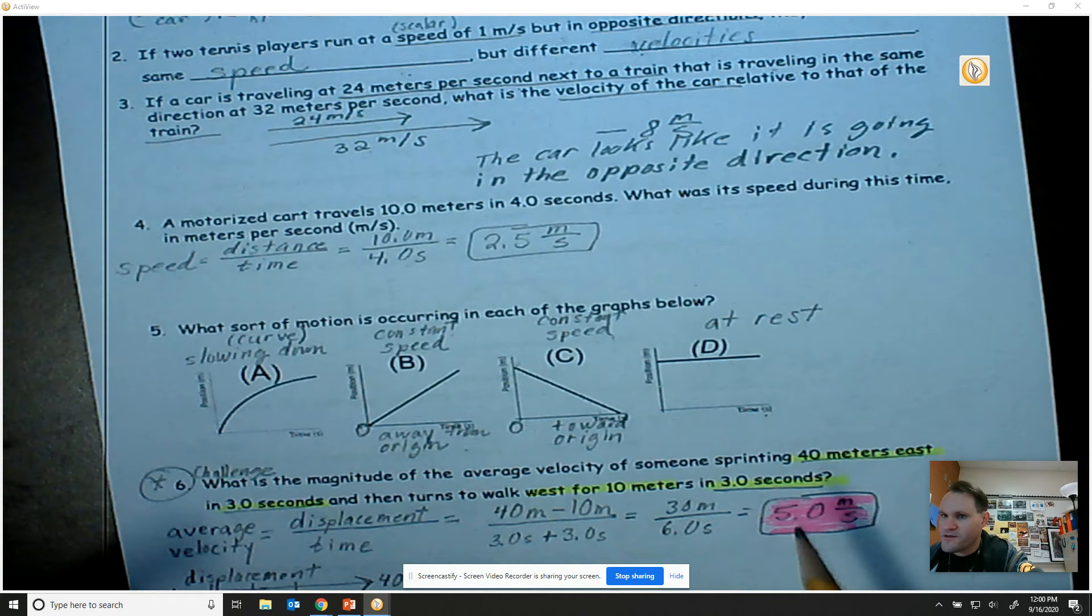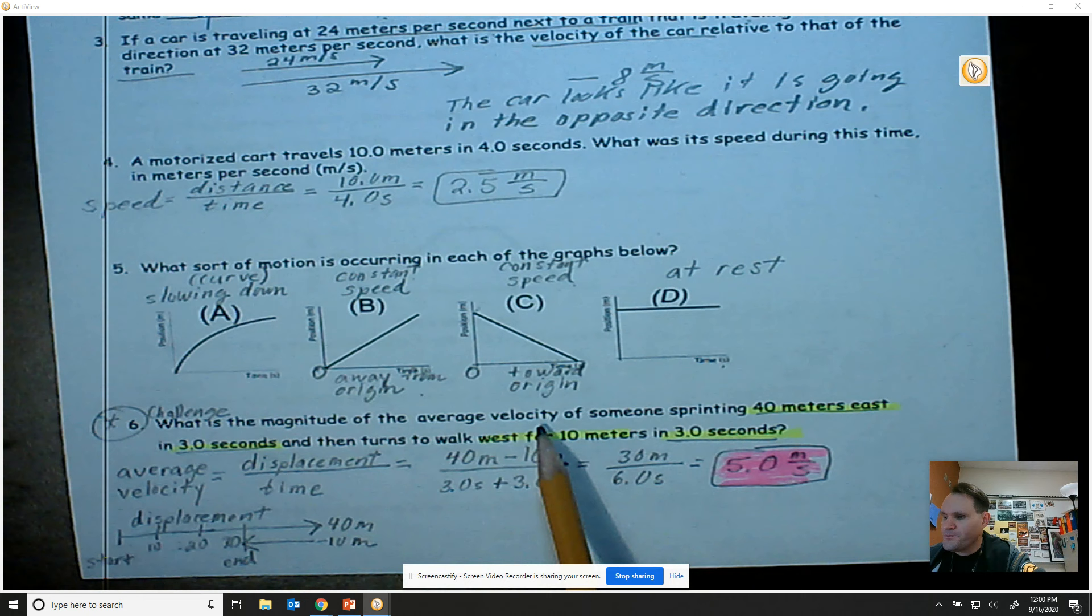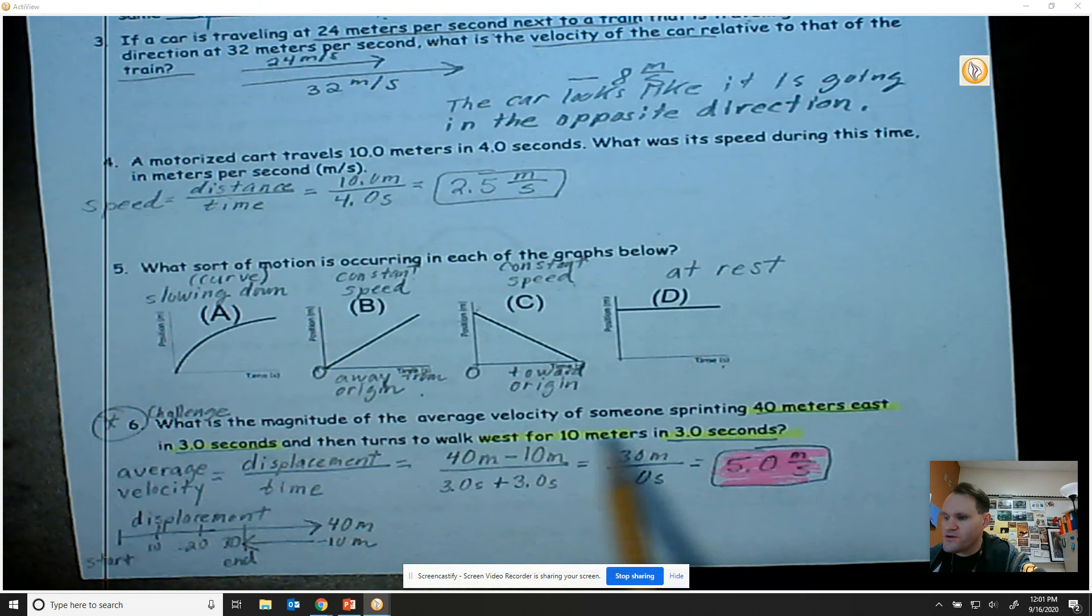Last question, number six on this particular side, and I'll have another video part two of the unit test review. They're asking what is the magnitude of the average velocity of someone sprinting 40 meters east in three seconds and then turns to walk west for 10 meters in three seconds.